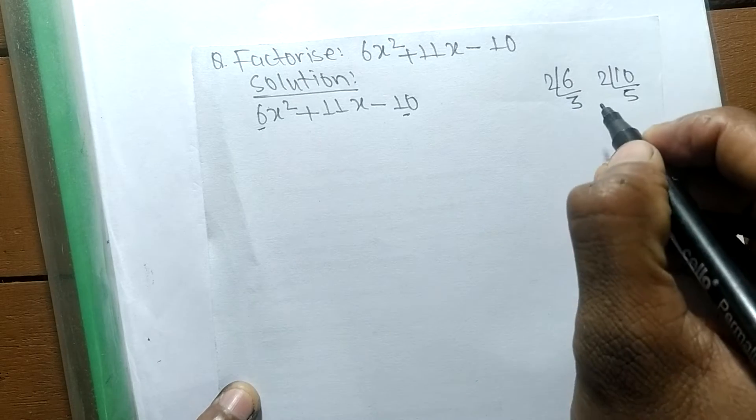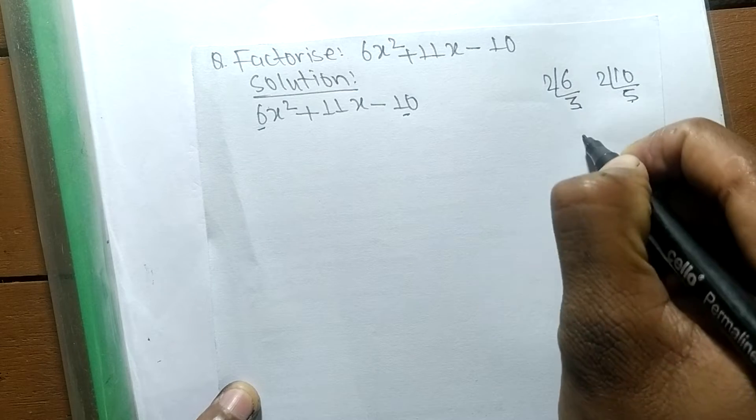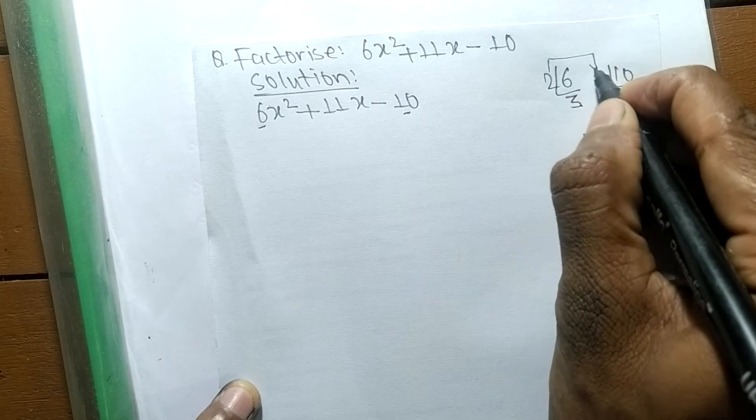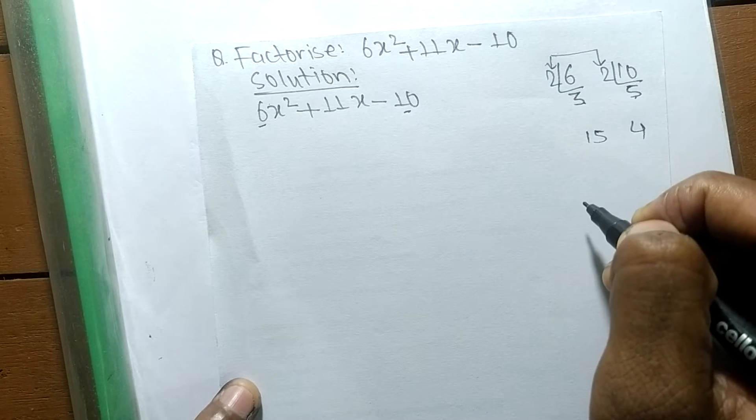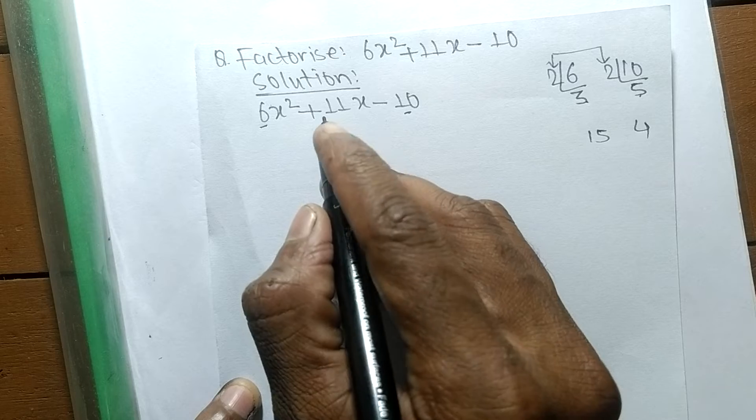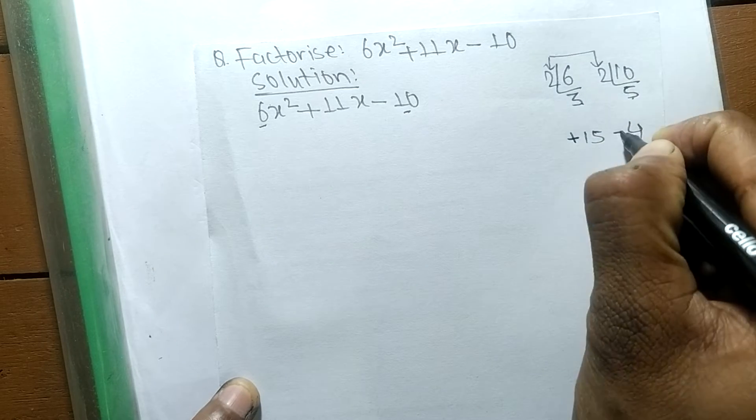When you multiply 3 and 5 we get 15, and when you multiply 2 × 2 we get 4. So now we need plus 11. When we keep here plus and here minus, then +15 - 4 = +11.